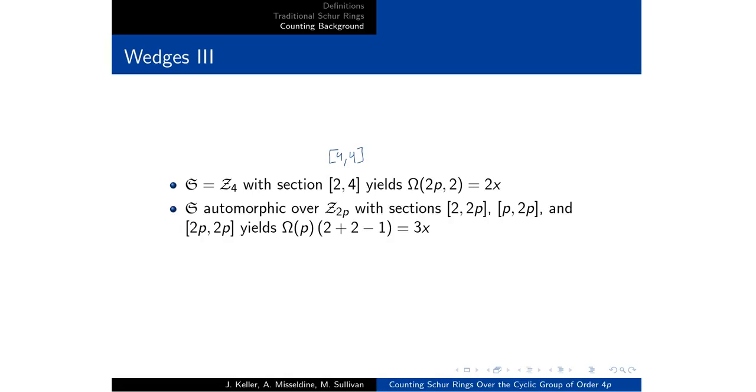Now, if we recall back to our definition, the classes had to be subsets of Z4 and also cosets of K. Well, every coset of Z4 is also going to be a coset of Z2. So this 2,4 section is preferable. And with this particular section in mind, we'll get omega of 2P2.